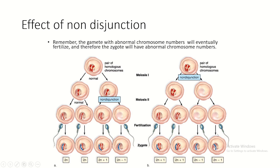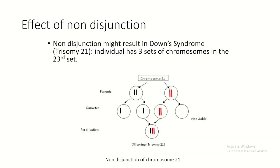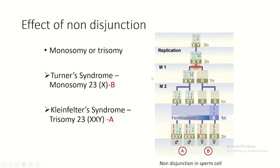I advise you to draw this on your own to memorize it properly. Here's the example of trisomy 21 due to non-disjunction. This is the example of Turner syndrome where non-disjunction occurs in the sperm - X and Y end up in the same daughter cell, and upon fertilization some zygotes are XXY (Klinefelter syndrome) while other daughter cells produce X-only zygotes (Turner syndrome).